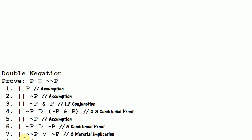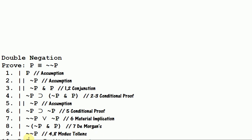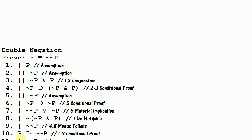And then I use De Morgan's and I get the negation of not P and P. And this is why I put these in this order in the first place — if I had put them in the order of P and not P, I would have to do a commutation at some point, which would just add an extra line to the proof. So now that I have the negation of not P and P, I use modus tollens and I get not not P. And now I can close off this conditional proof and I get if P then not not P.